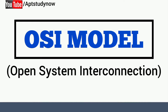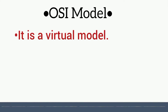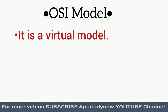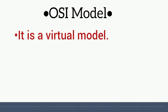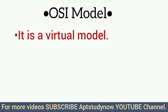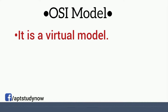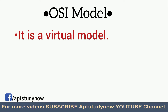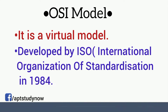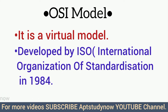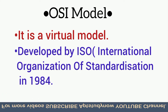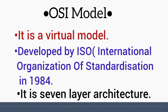The full form of OSI model is Open System Interconnection model. It is a virtual model — it does not exist in reality. It tells the concept of how data flows in a network, which is the main motive of the OSI model. It was developed by ISO, the International Organization for Standardization, in 1984.